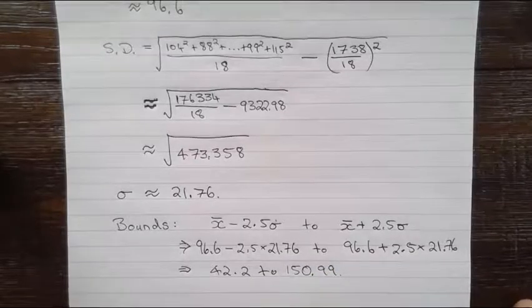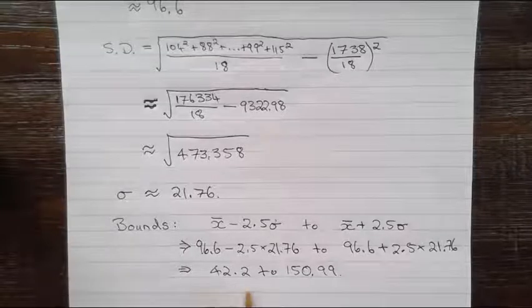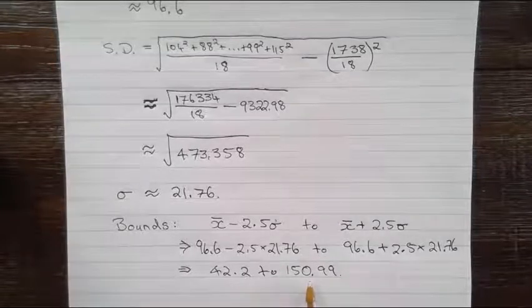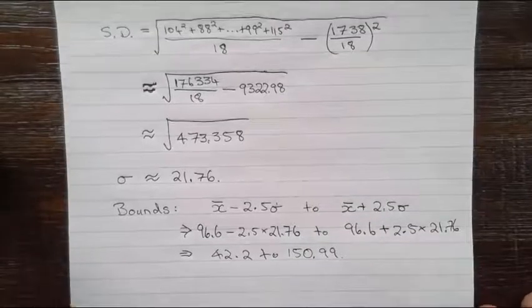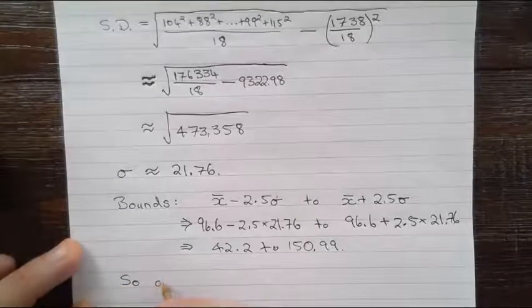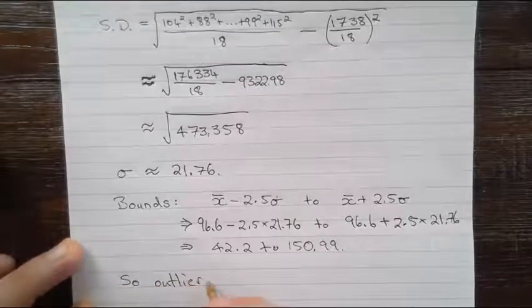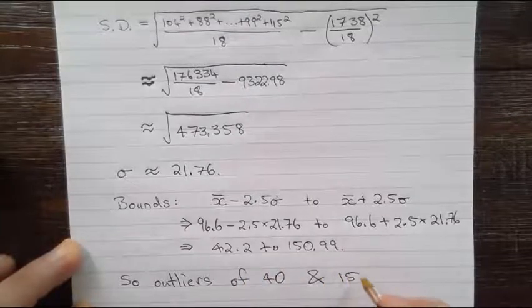So what we are looking for is values in our original data set which are less than 42.2 and greater than 150.99. Now there are only two of those values, and those values are 40 and 156. So we have the outliers of 40 and 156.